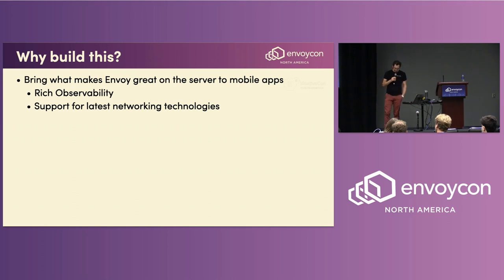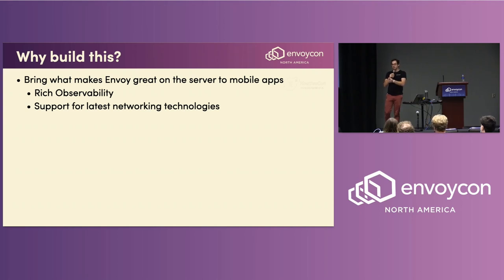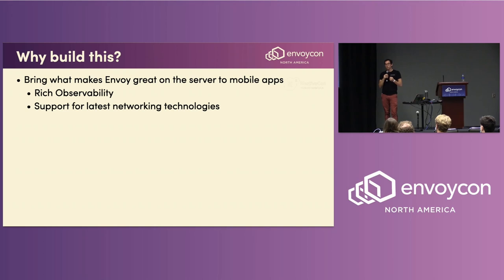Another reason is that Envoy has support for newer networking technologies. On platforms like Apple's, the networking library ships with the operating system, so users on older OS versions don't have access to newer features. By shipping our own networking library with our apps, we can backport those and support all our users, not just the ones on the bleeding edge.